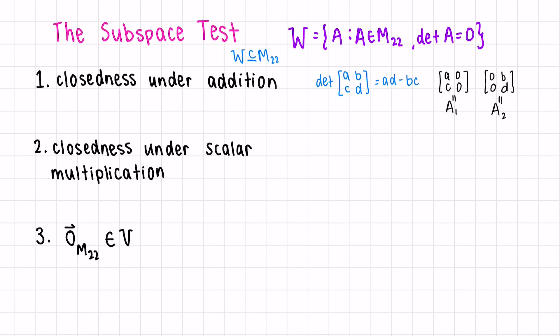And what happens if we add these matrices together? That's the first condition, closeness under addition. If we do A1 plus A2, we end up getting ACD, which doesn't always have a determinant of 0. To show this, we just need a concrete example.